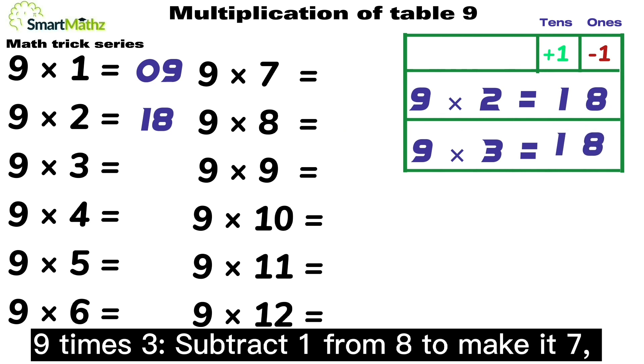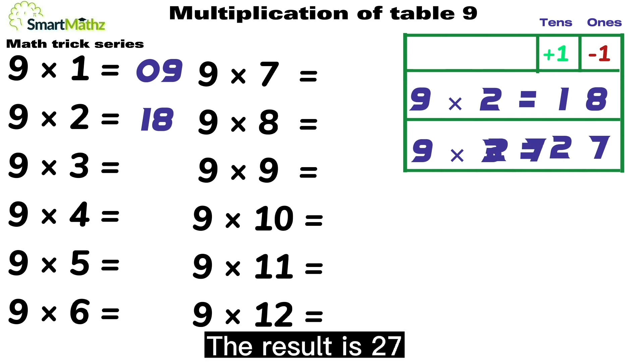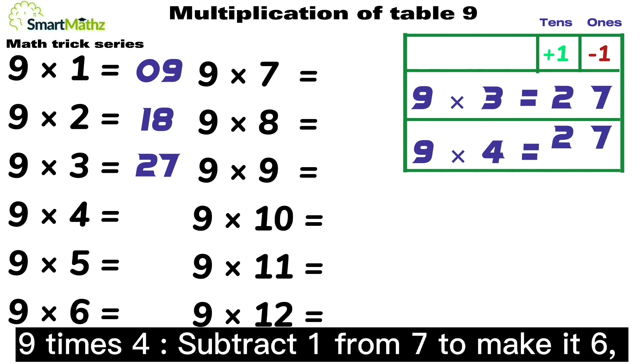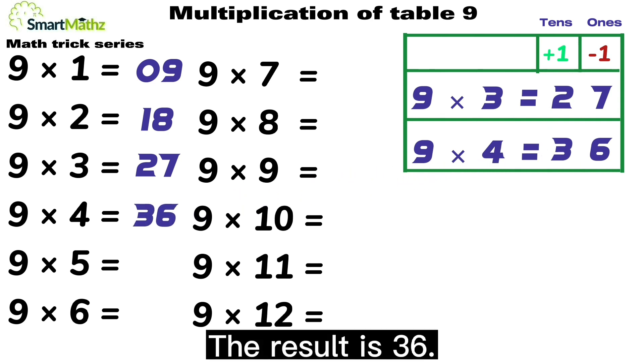9 times 3, subtract 1 from 8 to make it 7, and add 1 to 1 to make it 2. The result is 27. 9 times 4, subtract 1 from 7 to make it 6, and add 1 to 2 to make it 3. The result is 36.